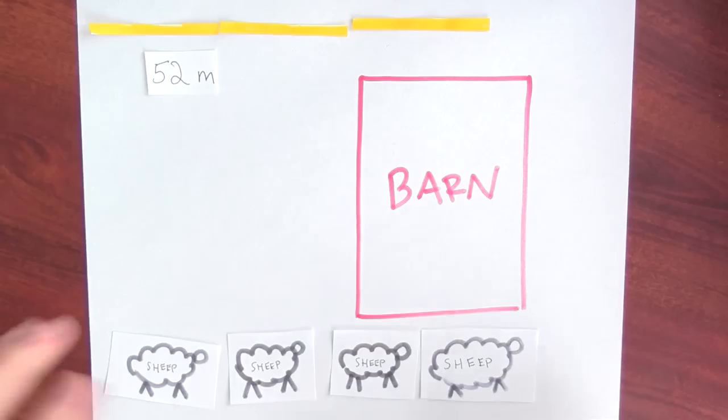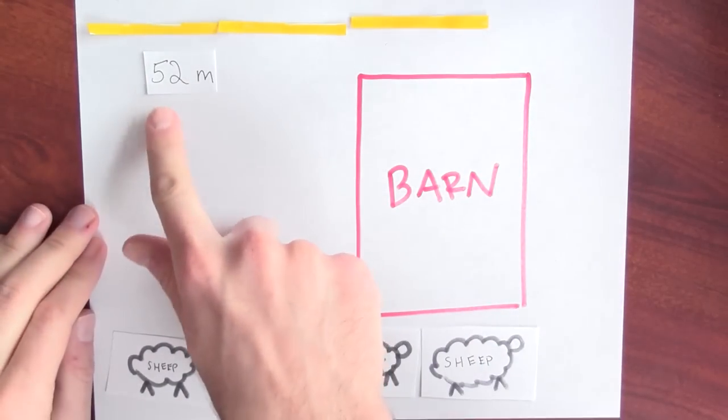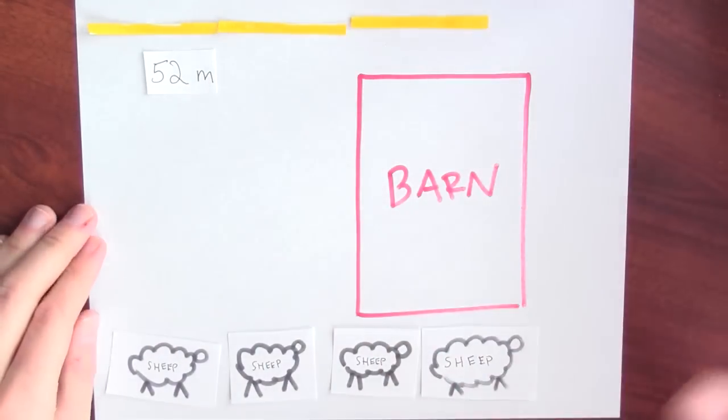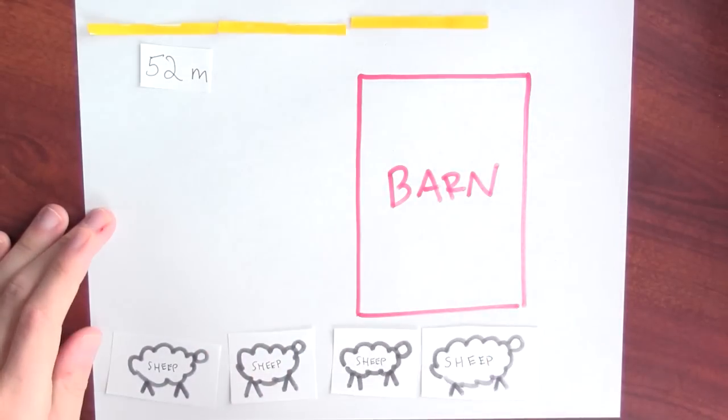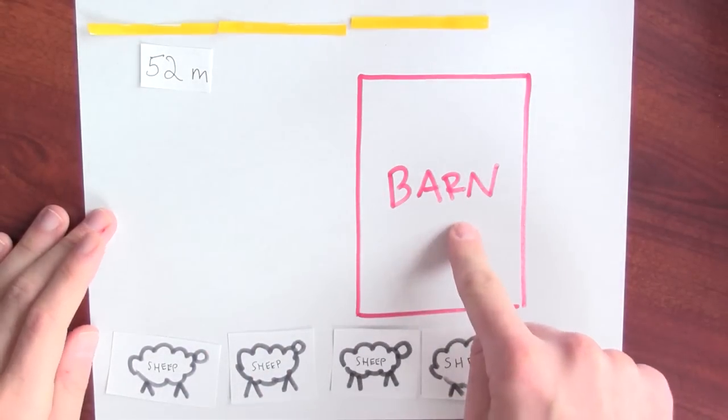Let's pretend that you're a shepherd and you want to build a fence for your sheep. Specifically, let's say that you've got 52 meters of fencing and you're committed to building a rectangular pen for your sheep next to your barn.